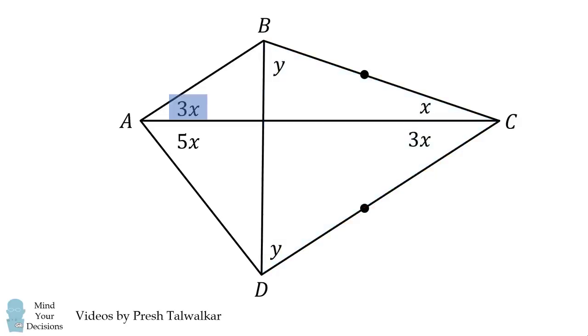We then notice that these two angles both have a value equal to 3X. This means that AB will be parallel to DC. Therefore, we must have the angle ABD equal to the angle BDC. This means angle ABD is also equal to Y.